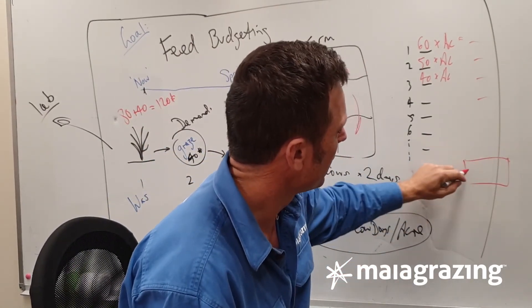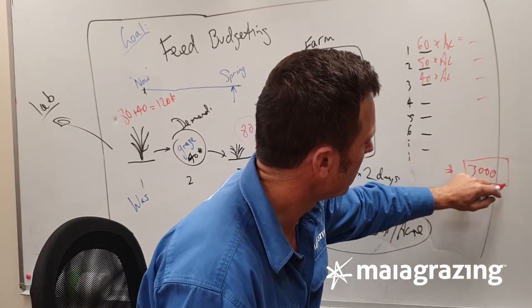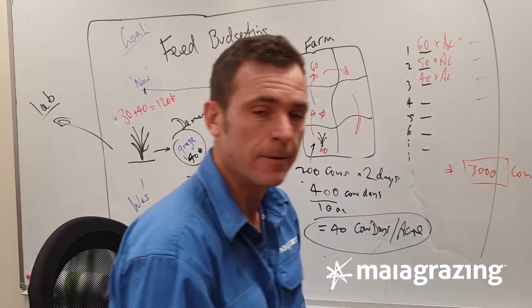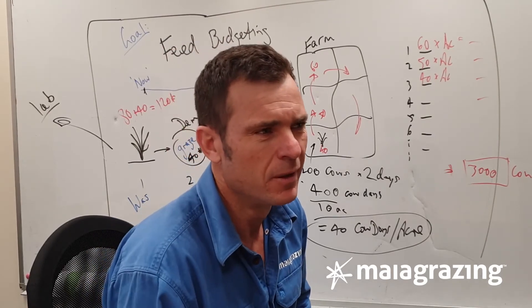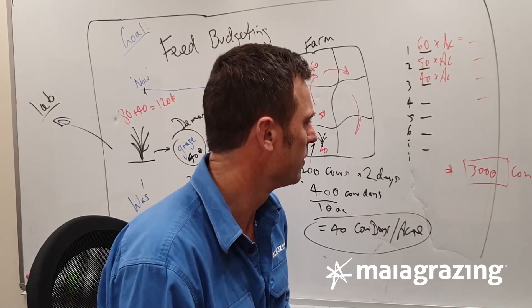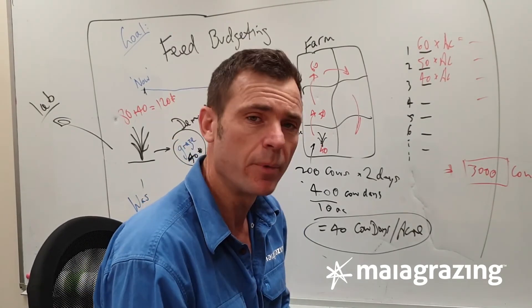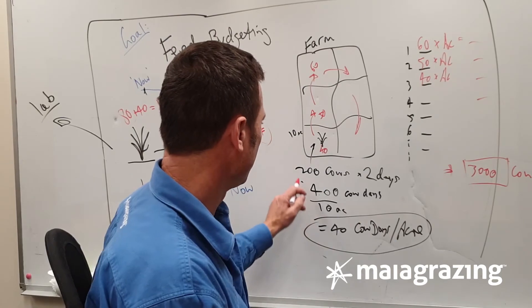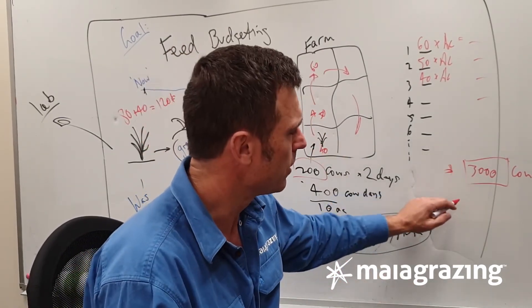We'll end up with a total, and we will have, for argument's sake, 3,000 cow days. Okay, so what does that mean? Well, 3,000 cow days kind of means I've got 3,000 days worth of feed for one cow. But I don't have one cow. How many cows do I have? Well, I've got something like 200 maybe, maybe more, maybe less.